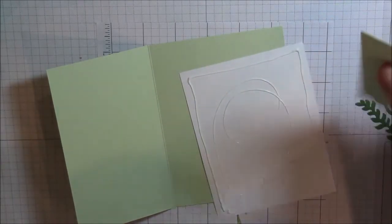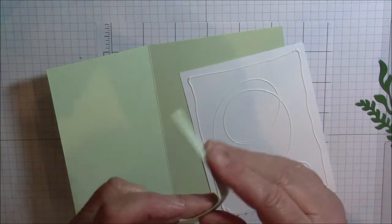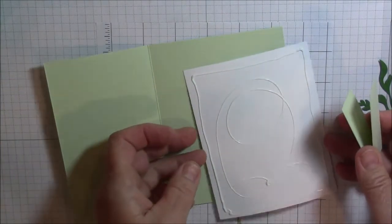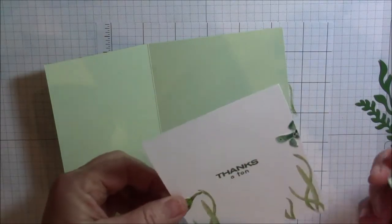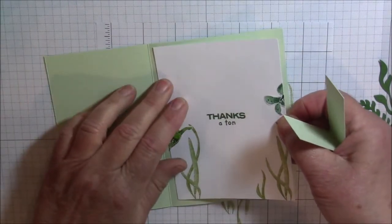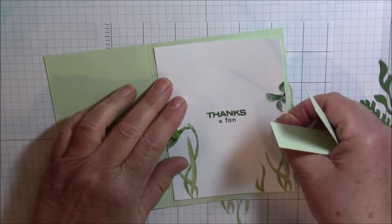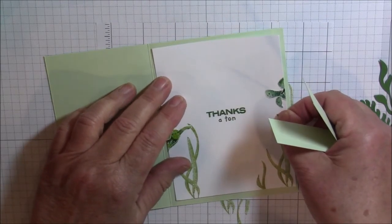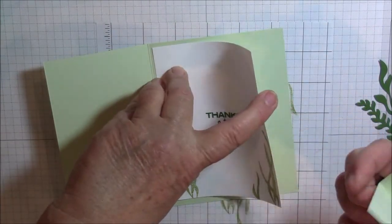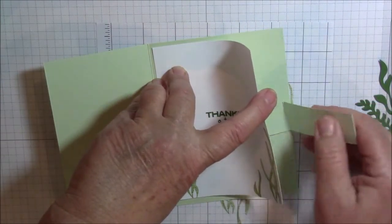Now this strip that we cut off before we are going to use that and that is going to be a flap that goes to the front of the card. I am not going to adhere the right edge. I just want to place this so that I have the same reveal around all the edges.